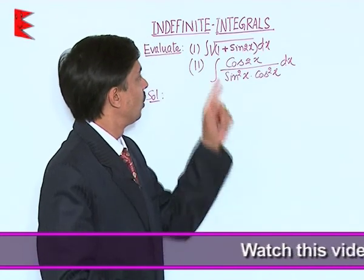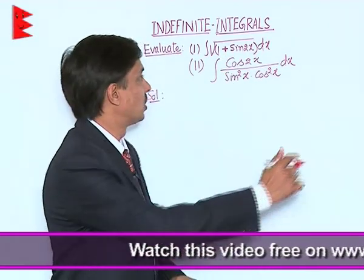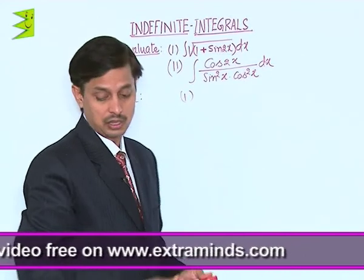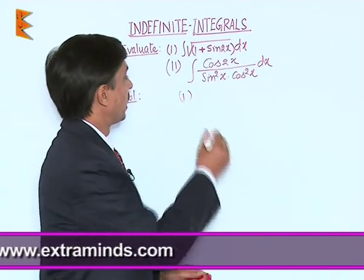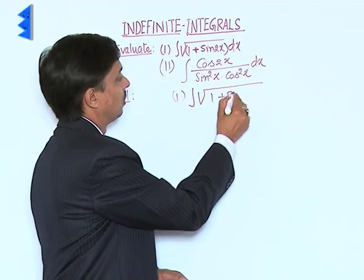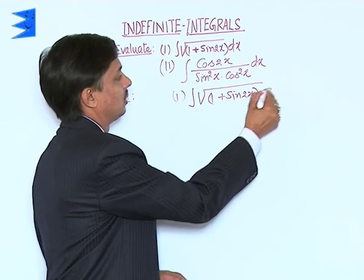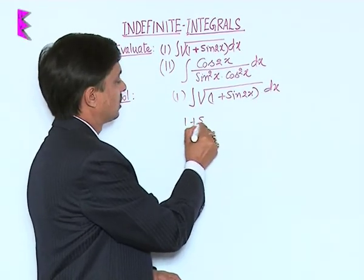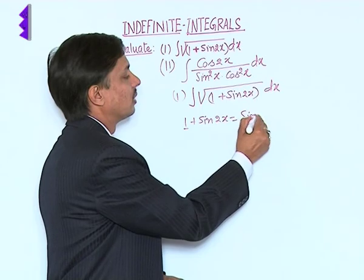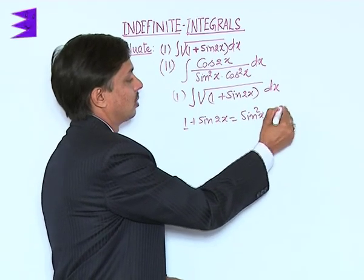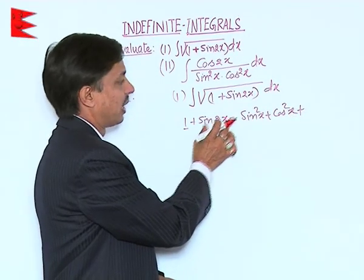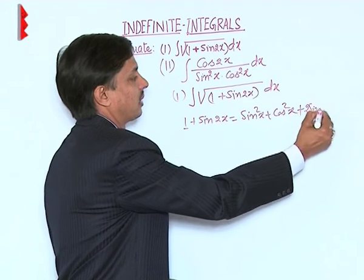The very first step is to think what transformation is possible for the part 1 plus sin 2x. We can write 1 plus sin 2x as an integration. In place of 1 we can write sin²x plus cos²x, and in place of sin 2x we can use 2 sin x cos x.